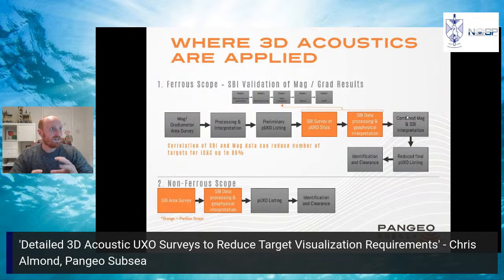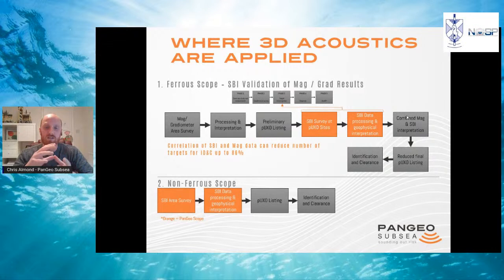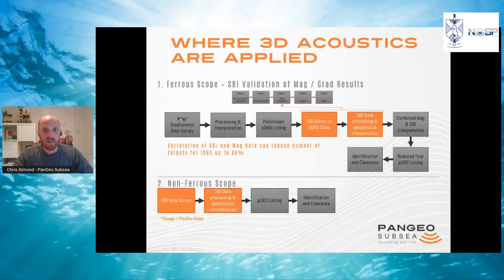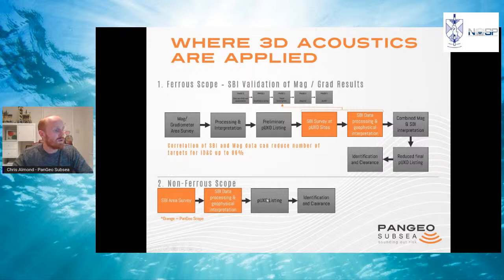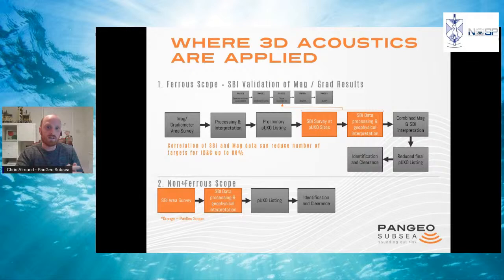This is where acoustic data really comes into play. In the standard workflow, after your magnetic UXO survey, you send out the ID&C vessel to deburry targets. By adding acoustics into the ID&C phase, you acquire a bit more survey up front but reduce the target listing significantly. In the second case — non-ferrous surveys — the acoustics is used as a standalone dataset. So in case one, it complements existing magnetic data; in case two, it works independently.